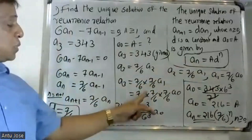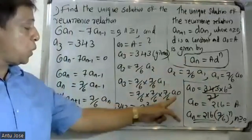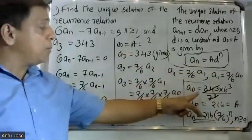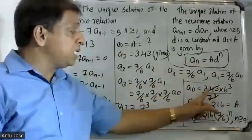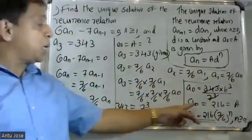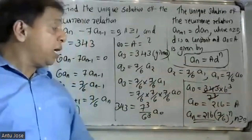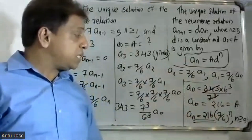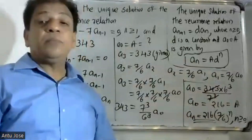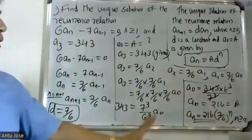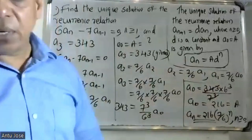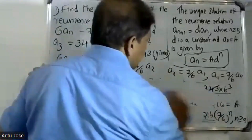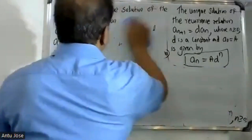This is a plus 1. So a naught value is found: 343 times 6 squared by 7 squared. The individual value is a0 into 7 over 6 raised to n — that gives the answer to this. I'm going to have a solution. Any questions? Yes, next question.